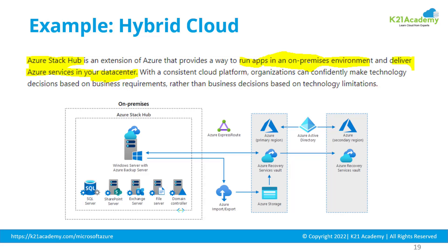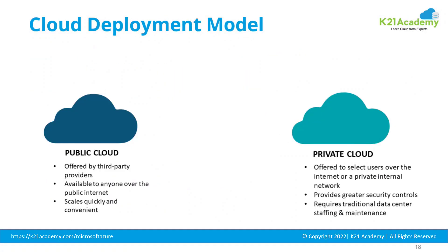An example of hybrid cloud is Azure Stack Hub, which lets you run your applications in an on-premise environment while providing the same kind of services you get in cloud, but in your data center. On the right-hand side you see Azure cloud, and then Azure Stack Hub — in this case you have a Windows Server with a backup server using Azure cloud as a recovery. In AWS this is called Outpost; in Oracle it's called Oracle Cloud at Customer. Connectivity can be over ExpressRoute, which is a dedicated pipe we'll cover in networking.